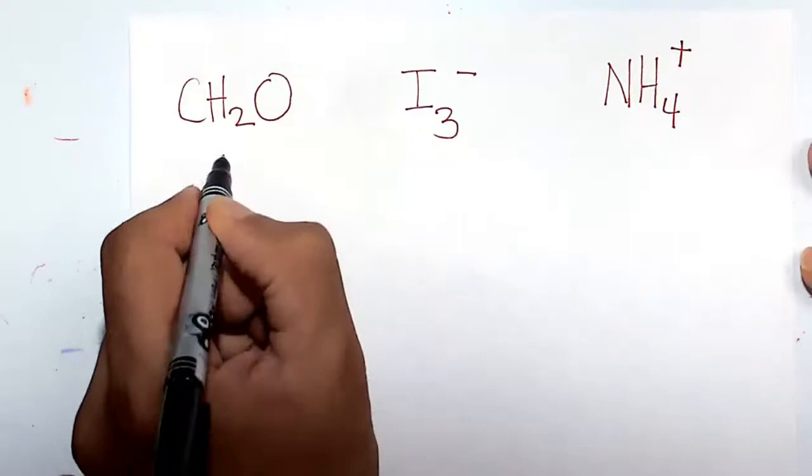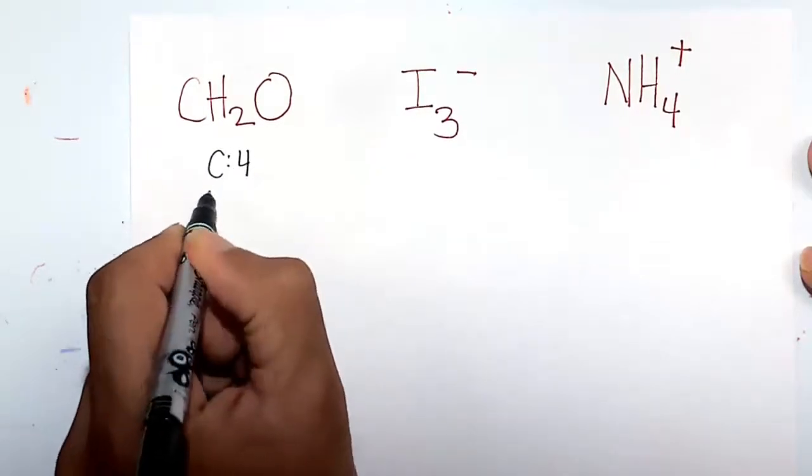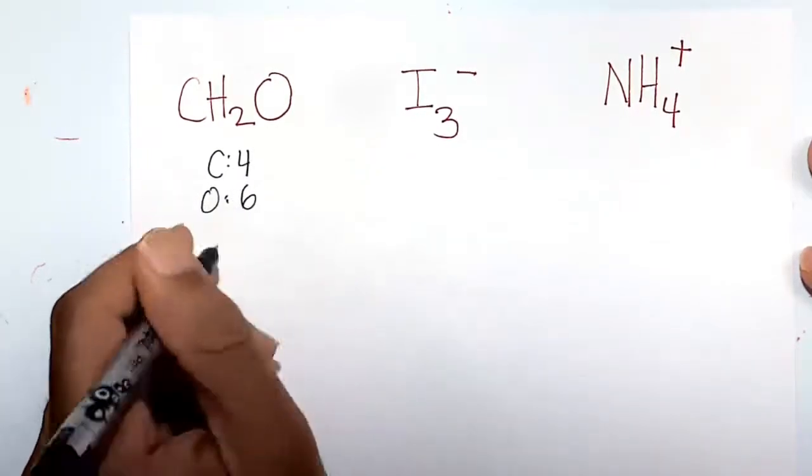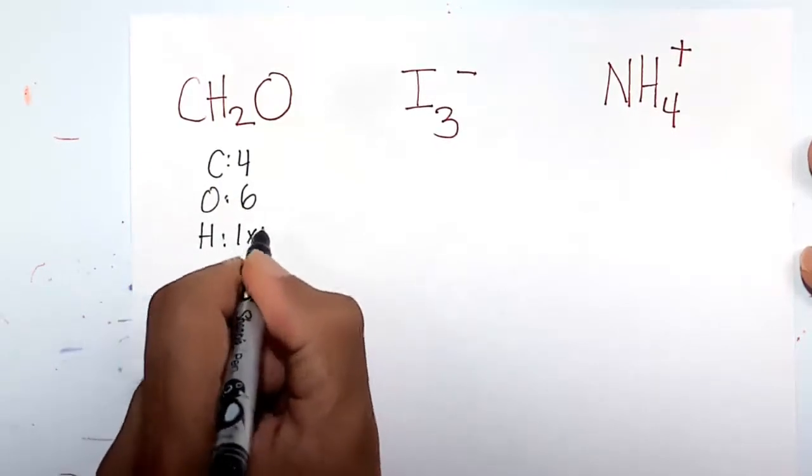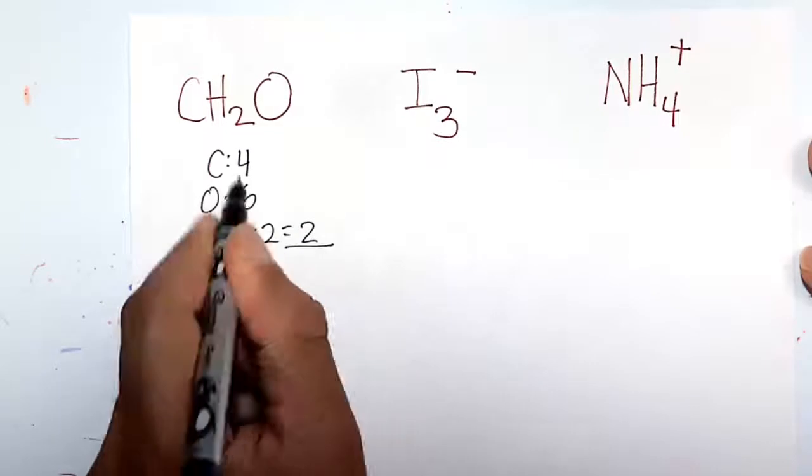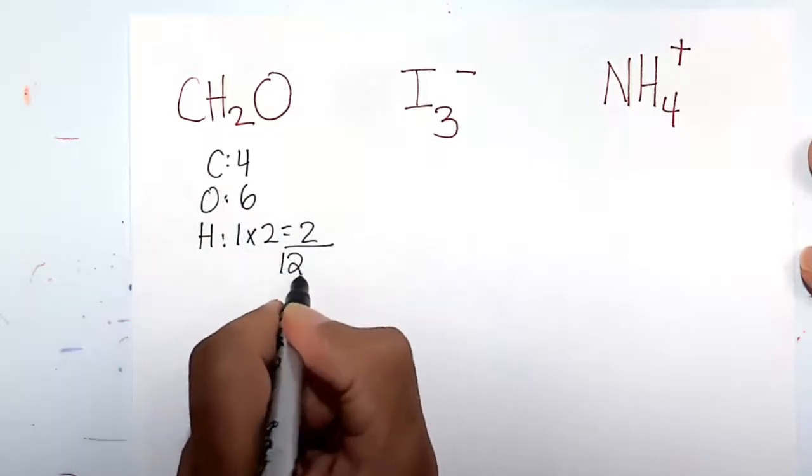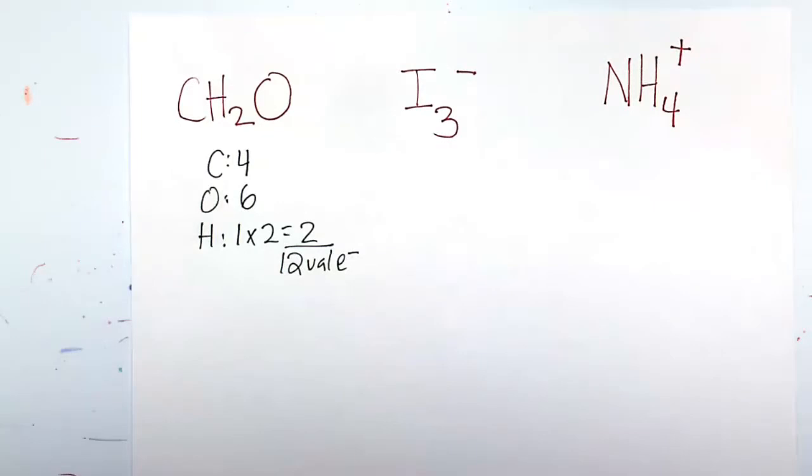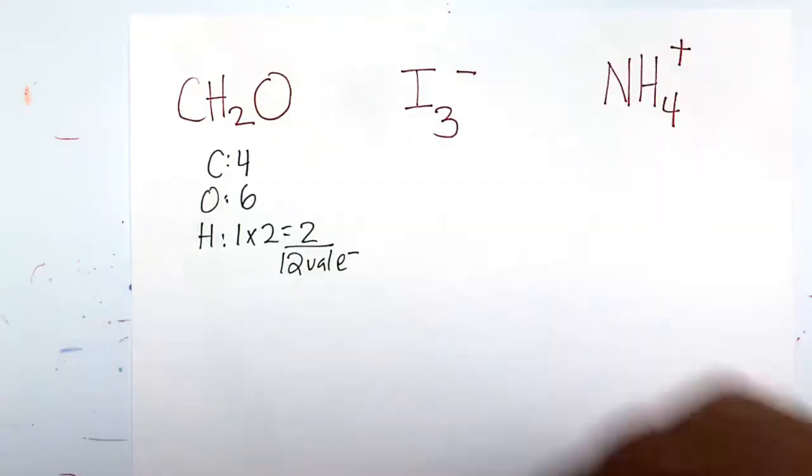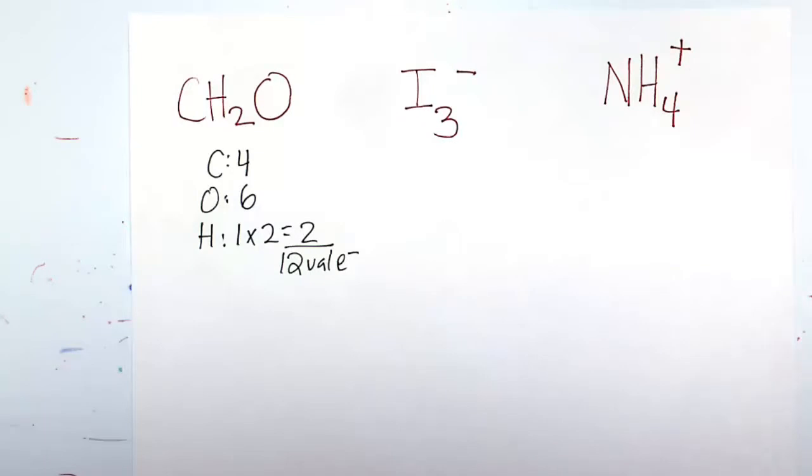So the first thing that we want to do is make an inventory of our atoms. Here we have carbon is going to be happy at 4, oxygen is going to be happy at 6, and hydrogen is going to be happy at 1, but we've got 2 of those there. So 4 plus 6 is 10, 10 plus 2 is going to be 12. So my goal is to get 12 valence electrons around the CH2O molecule, also known as formaldehyde.